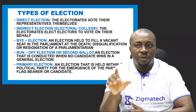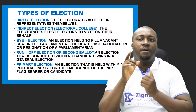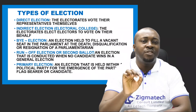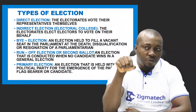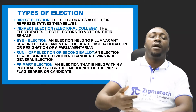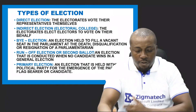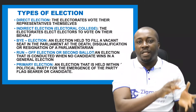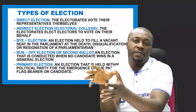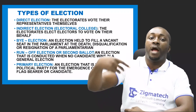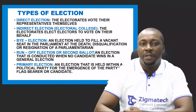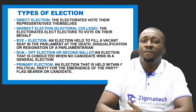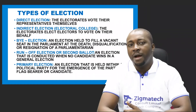The opposite of direct election is what we call indirect election, or electoral college. This is where the electorates elect a group of electors called the electoral college to vote on their behalf. The citizens elect a group of persons, and this group of persons will go and vote on behalf of the people. In America, they practice indirect election for the election of their presidents.